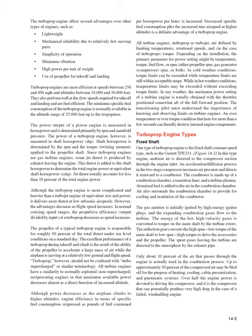All turbine engines — turboprop or turbojet — are defined by limiting temperatures, rotational speeds, and in the case of turboprops, torque. Depending on the installation, the primary parameter for power setting might be temperature, torque, fuel flow, or RPM — either propeller RPM, gas generator (compressor) RPM, or both.